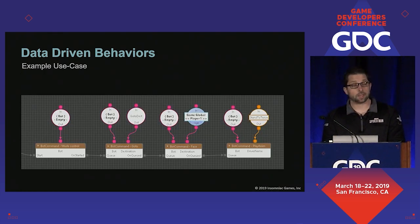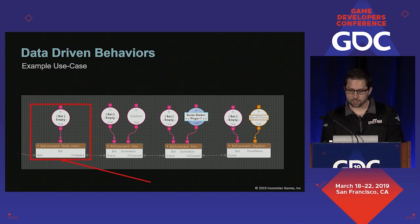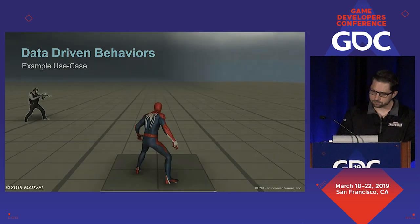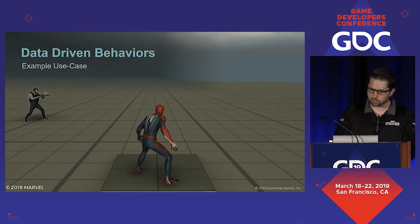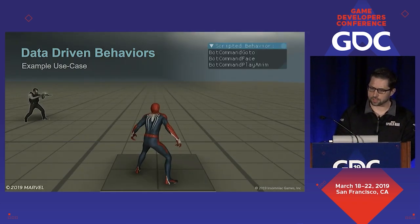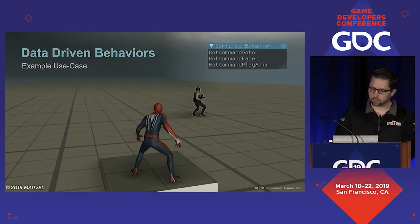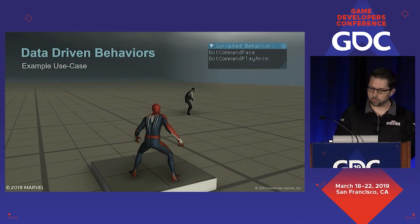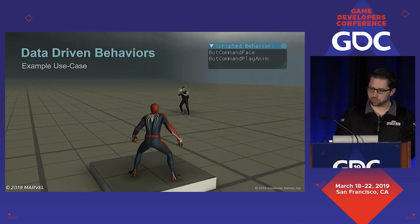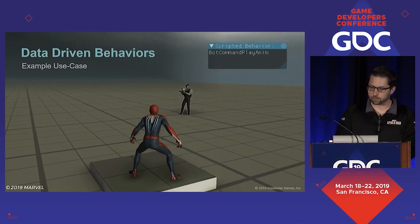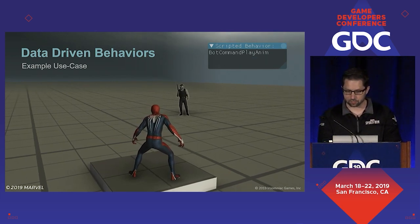Here's what issuing commands looks like from script. We first request control of a bot and tell them to go to a position, face their target, and play an animation. And here's what things look like in game — you can see the bot command queue here. You can see the bot move to a position, then face the player, and then finally play the provided action.